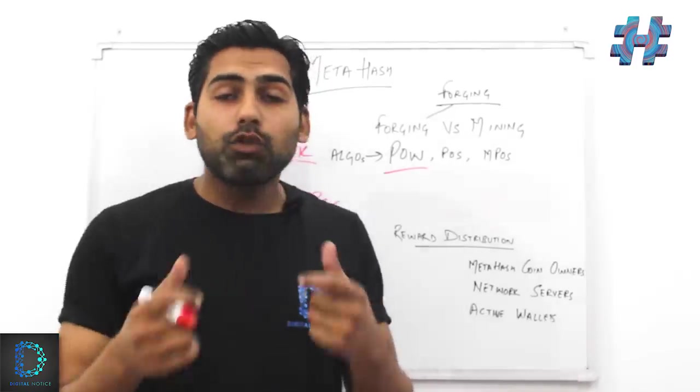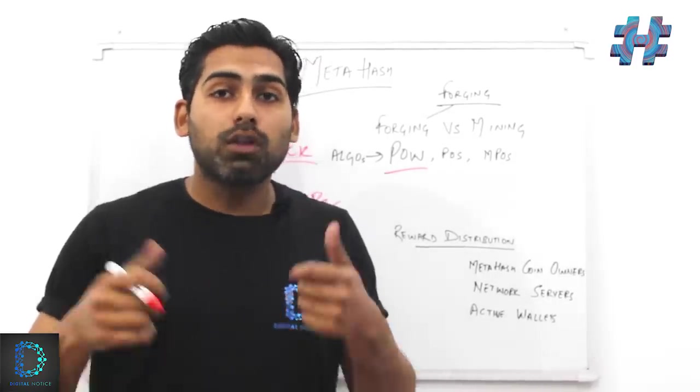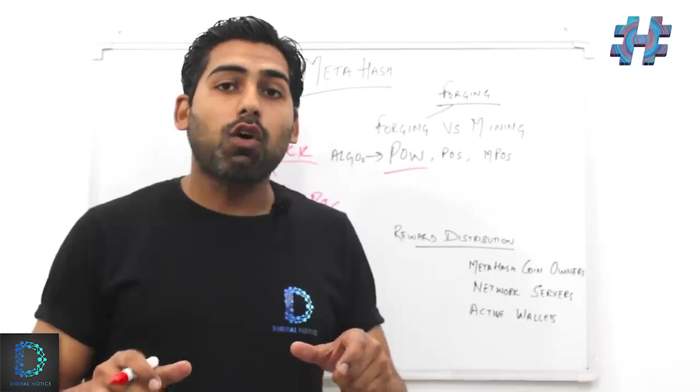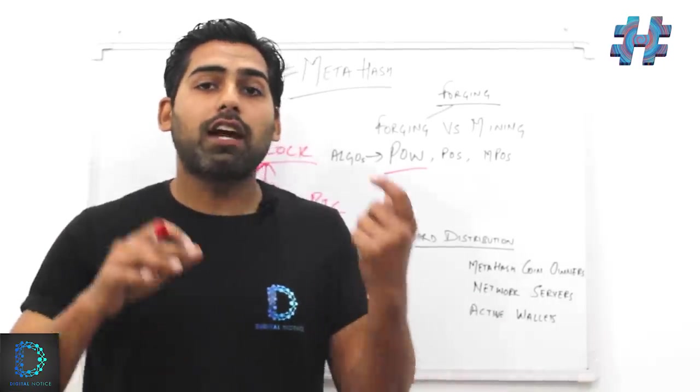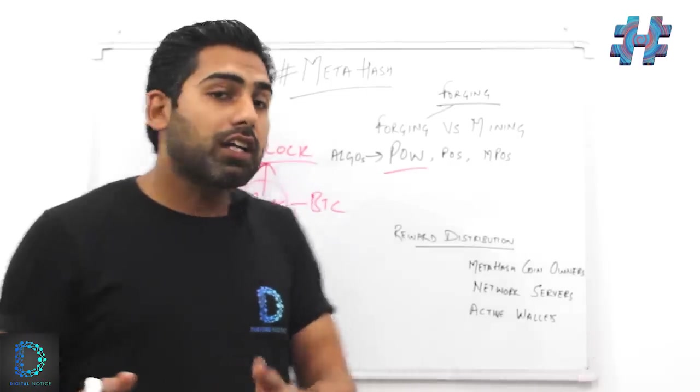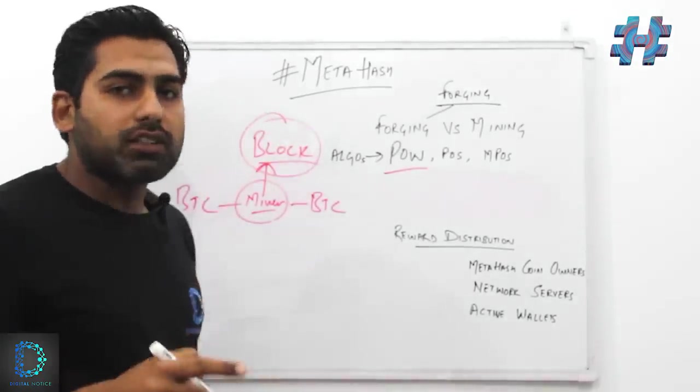Whenever a miner generated a block, he was rewarded with some new bitcoins—new bitcoins in the sense that these were the coins that were to be emitted into the market. There was a certain number of coins already circulating in the market, but the new coins that had to be entered, that had to be emitted into the market, were rewarded to the block generators. This was the case in mining.